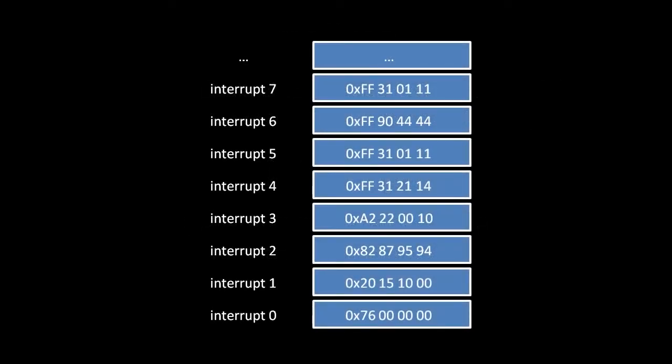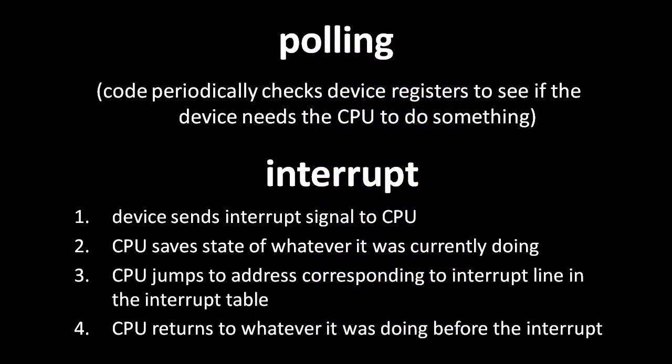The operating system stores a list of addresses for these handlers in the interrupt table, and the CPU keeps the location of this table in a status register. When an interrupt signal is received, the CPU is hardwired to copy the current program counter to memory so that it can later pick up where it left off. The CPU then looks in the interrupt table for the handler address associated with the interrupt line — e.g., line 0 corresponds to the first handler address. The CPU then jumps execution to this address, and the handler does its business to service the device. When finished, the handler is supposed to restore the CPU to its state before the interrupt. For example, if a handler uses a general purpose register, it first copies the content to memory, then copies that content back when finished.